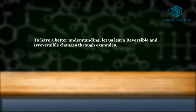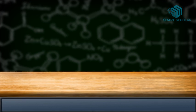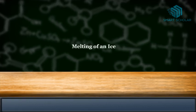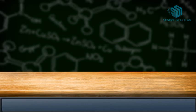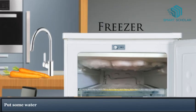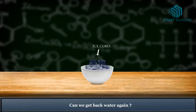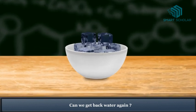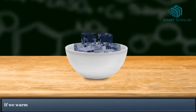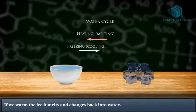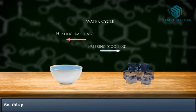Reversible change: Melting of ice. Put some water in the freezer of a refrigerator—it will turn into ice. Can we get back water again? If we warm the ice, it melts and changes back into water. So this process is a reversible change.